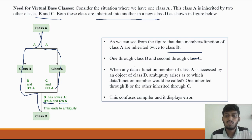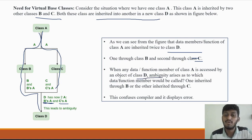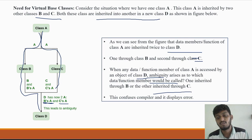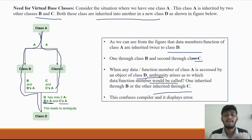One copy of class A's data comes through class B and a second copy comes through class C. When any data member or function of class A is accessed by the object of class D, ambiguity arises as to which data member or function would be called. This is the problem — the compiler creates confusion and an error is displayed.